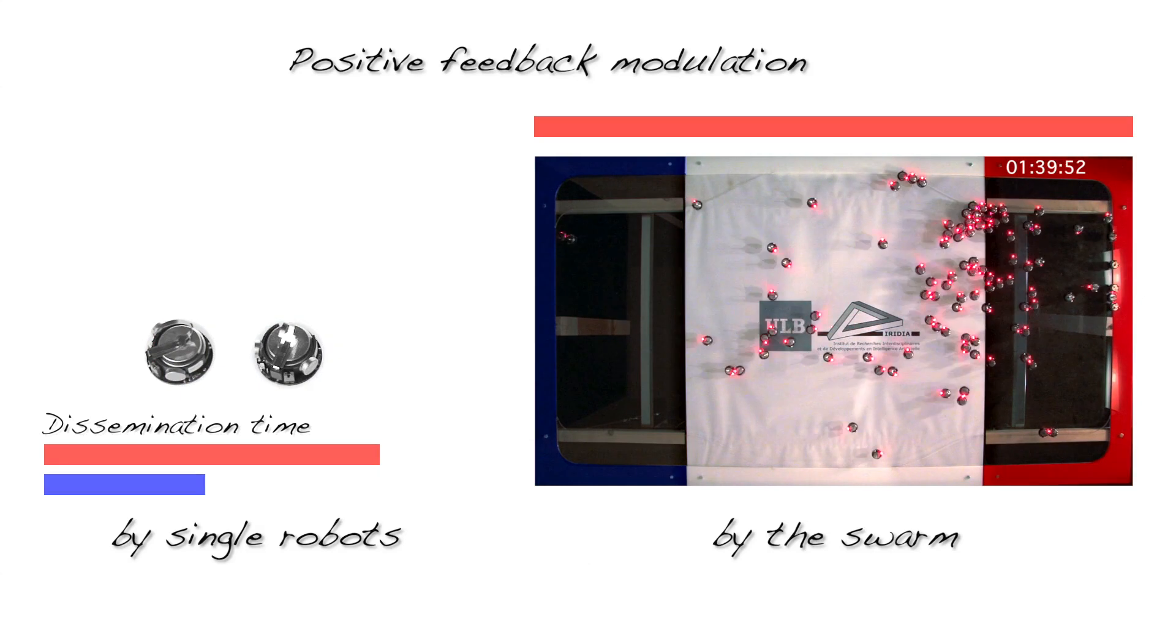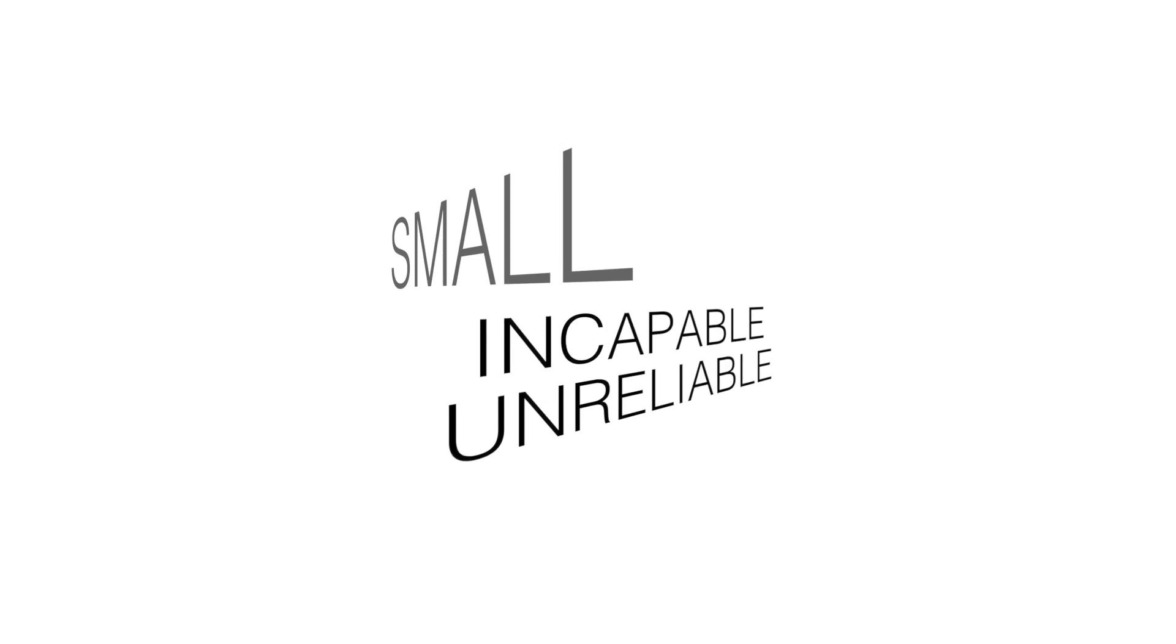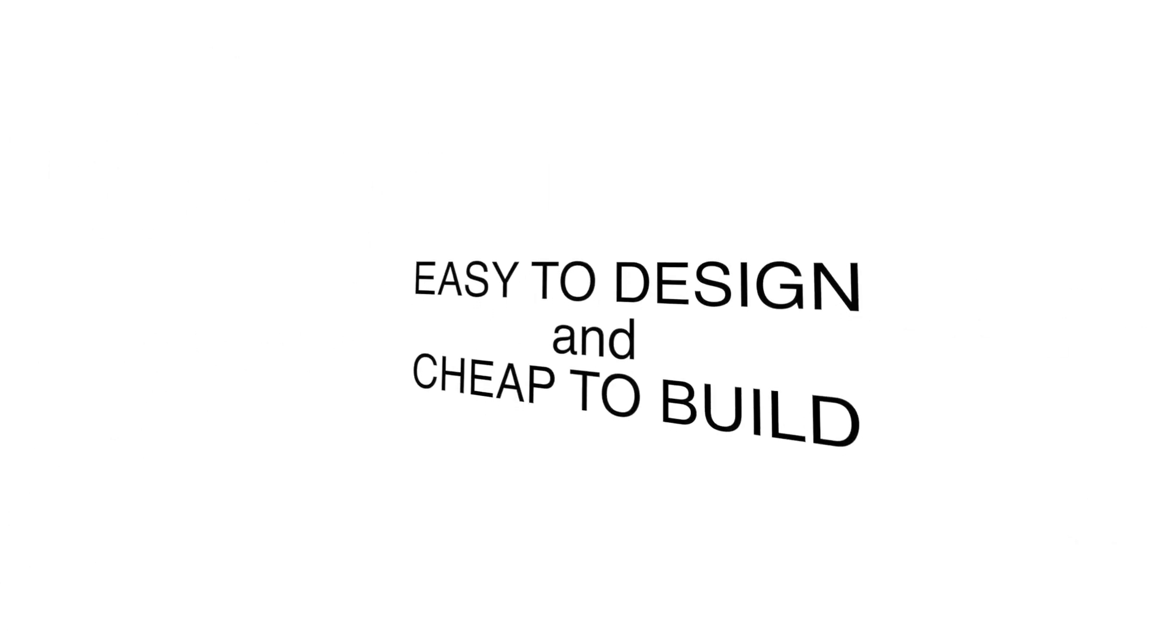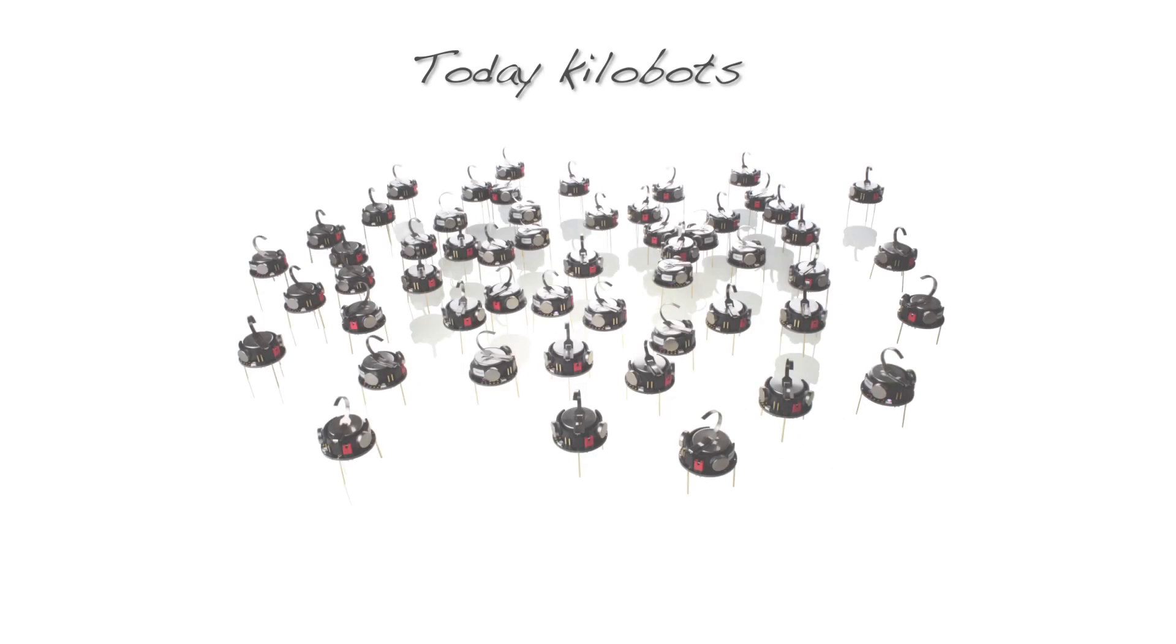Self-organized collective decisions let the swarm overcome the limitations of its individual robots. In this way, swarms of small, incapable and unreliable robots, which are easy to design and cheap to build, can still achieve their collective goals.